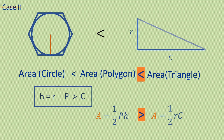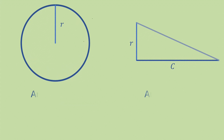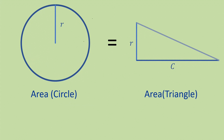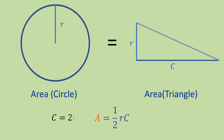What's left? We know that the area of the circle is not greater than the area of the triangle, and it is not smaller either. So the only thing left is that they are equal. That's the proof by the brilliant mathematician Archimedes. We can further solve this by putting c equal to 2πr, which gives us the area of the circle as πr².